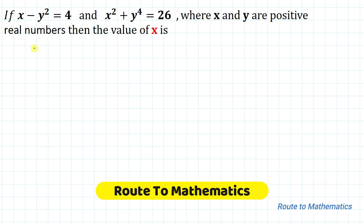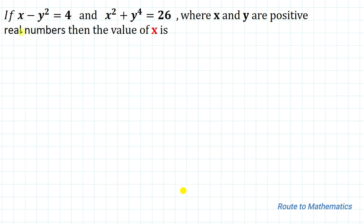Hello everyone, welcome to Root 2 Mathematics. In this video, we are going to solve this interesting algebraic question. The given question is: if x minus y² equals 4 and x² plus y to the power 4 equals 26, where x and y are positive real numbers, then find the value of x. We have a system of equations and we are asked to find the value of x.